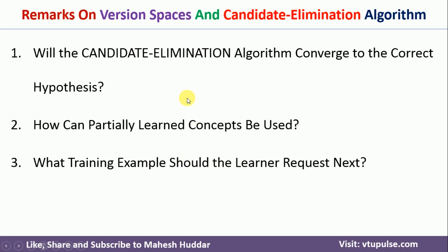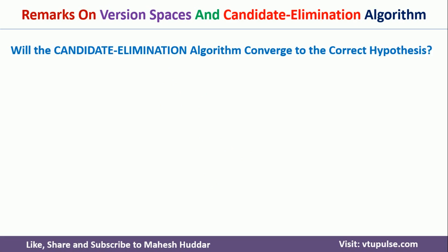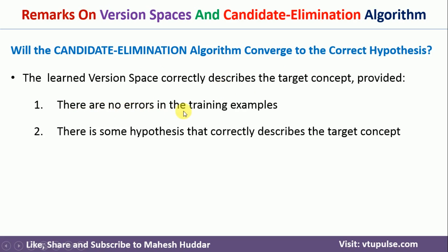Now let's understand each remark one by one. The first remark: what is the guarantee that the candidate elimination algorithm will converge to the correct hypothesis? Two criteria must be satisfied. First, there should not be any errors in the training examples — if there are errors, you cannot guarantee convergence. Second, there should be some hypothesis in the hypothesis space that correctly describes the target concept.